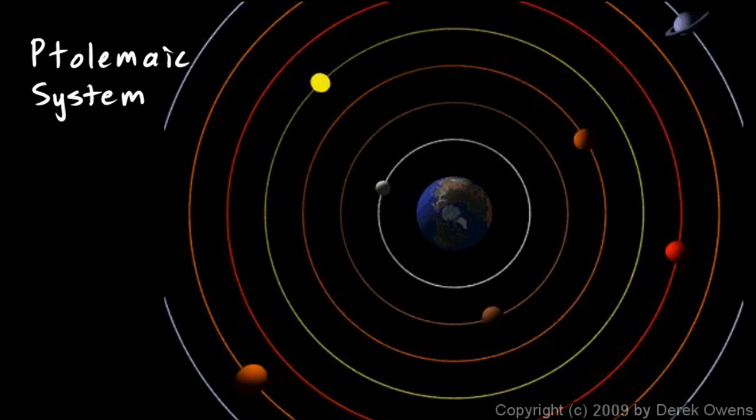Now, even though the Ptolemaic system is not correct—we don't believe the Earth is at the center, but rather the Sun—it was accurate in that it could predict where the planets would be on a given night. If you wanted to know where Mars would appear in the sky on a particular day and time, for example, the Ptolemaic system would predict that very accurately.